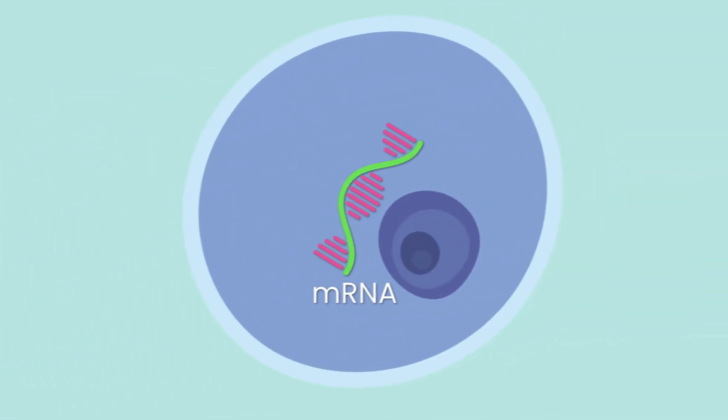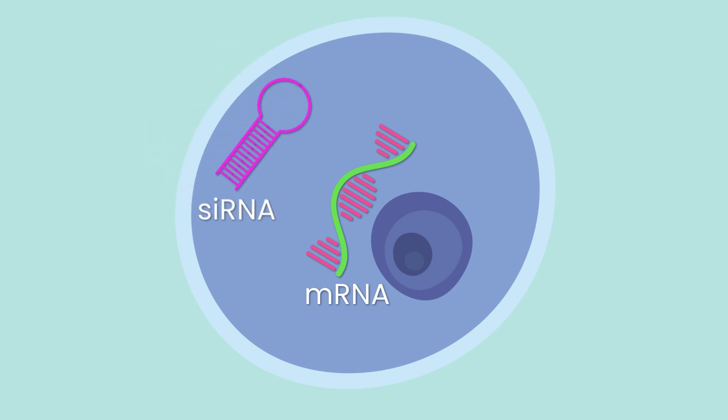Knocking out or dampening the production of a native protein by transfecting cells with a small interfering RNA that disrupts the translation of the protein.